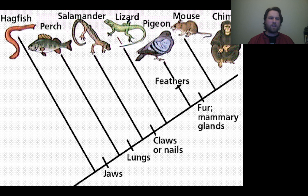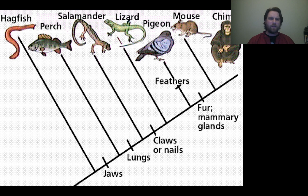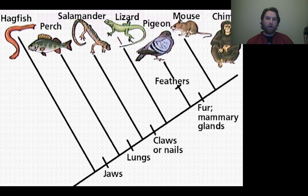Looking at a full cladogram with multiple organisms, derived characters like jaws, lungs, claws, and nails appear along the bottom. If asked what derived characters a salamander and a lizard share, you trace up to where they meet: the answer is jaws and lungs. Claws or nails don't appear until after the salamander's branch. The lizard shares jaws, lungs, and claws with everything past it, including the pigeon, mouse, and chimp.